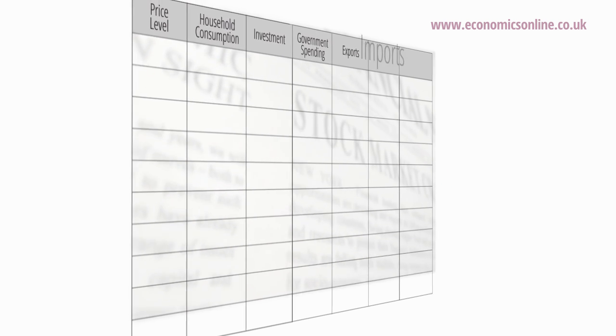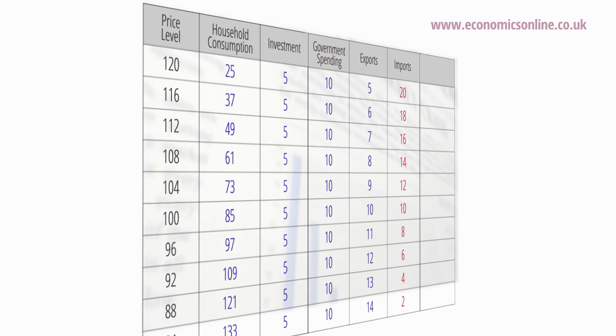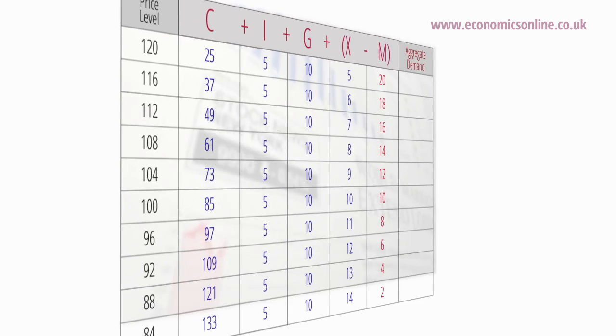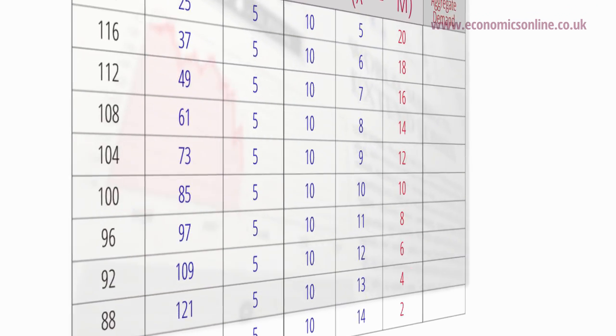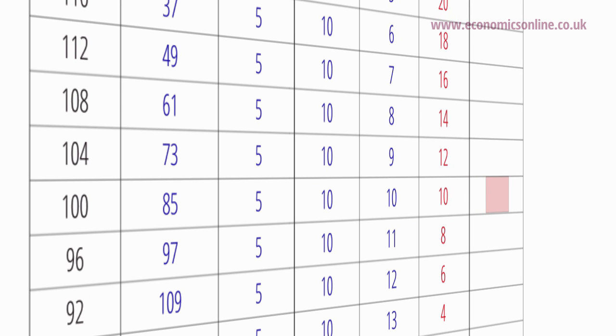In this simple example, we can see how the components of AD will respond to different hypothetical price levels. The model starts by assuming the quantity of money is constant and nominal wages are fixed. All other variables, other than the price level, are also assumed to be constant. So, at a price level index of 100 in our example, consumer spending is 85 billion, of which investment is 5 billion, government spending is 10 billion, and trade is in balance with both exports and imports at 10 billion. This gives us an AD of 100 billion.